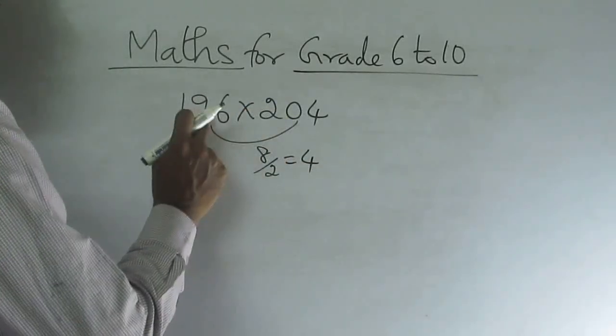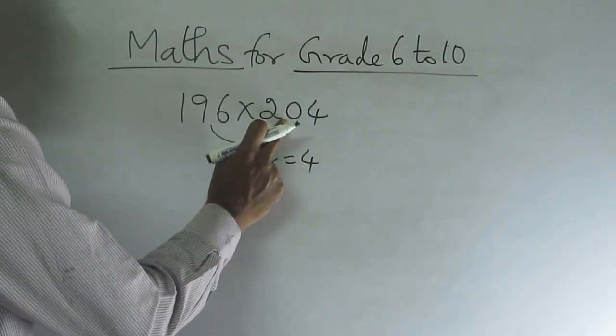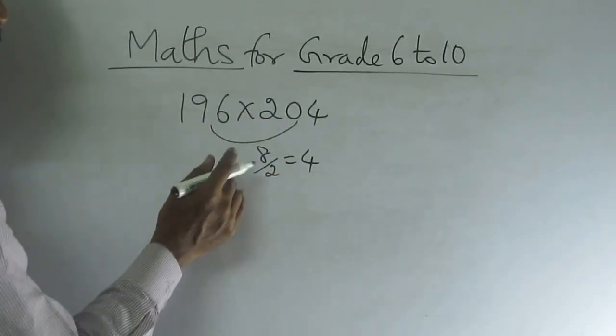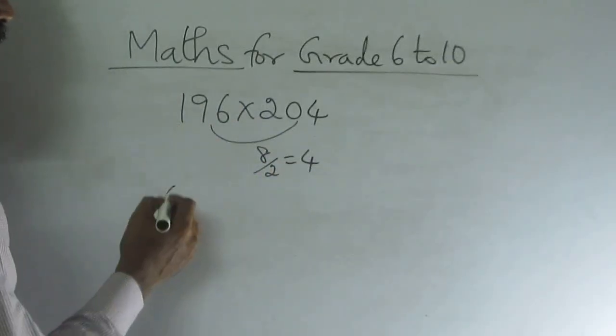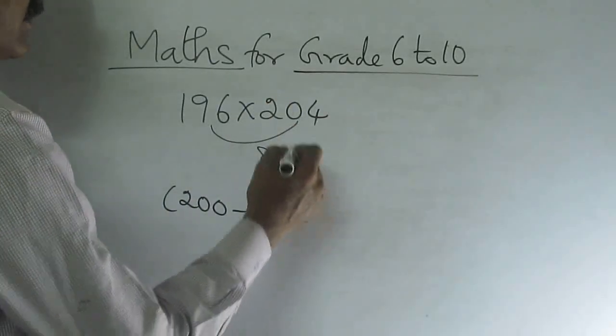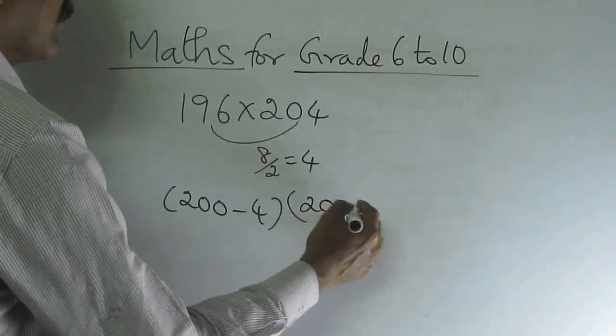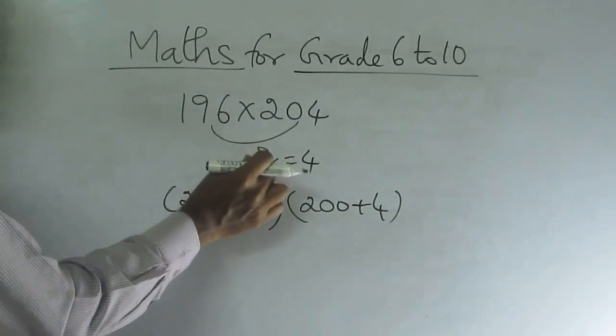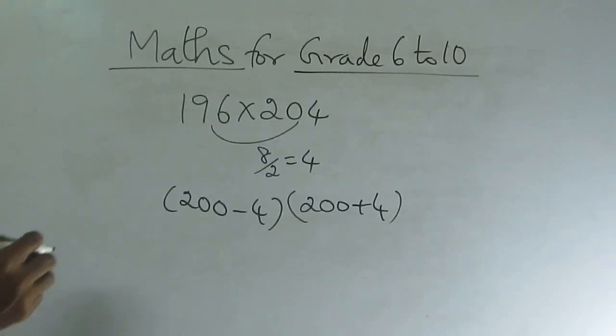So now subtract 4 here, now add 4 here. 204 minus 4, 200. 196 plus 4, 200. So now we can write this 196 as 200 minus 4 and this 204 as 200 plus 4. See the gap between the numbers. If the gap is even, divide it by 2.